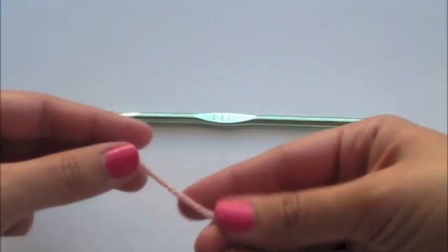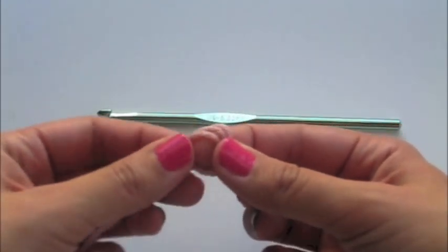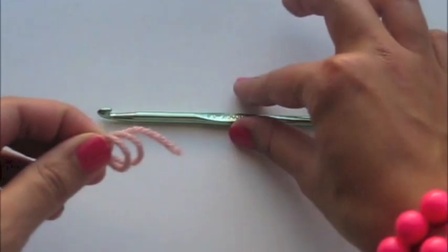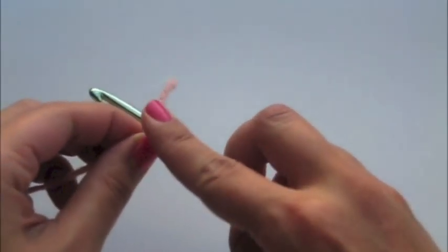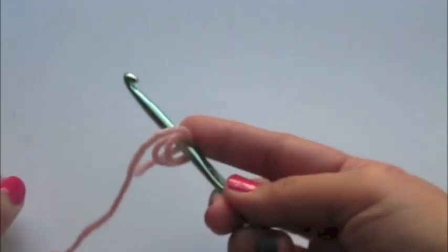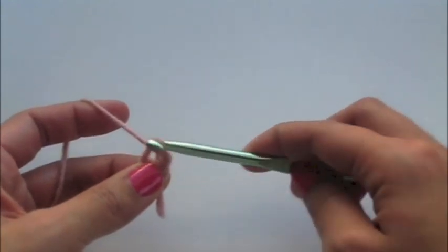Aloha YouTube, this is Miran. We're going to start with a magic ring by yarning over your finger two times and grabbing your size I hook and putting it right through the center. Then you're going to pull up a loop and chain one.